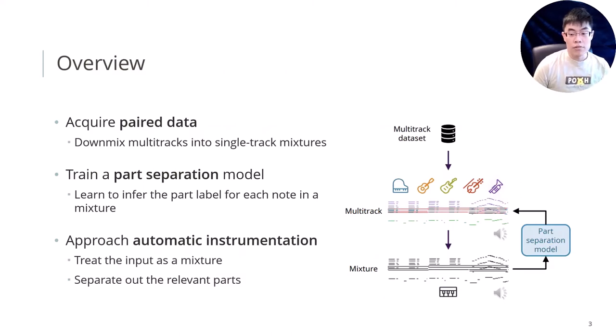An overview of our project is that we first acquire paired data of solo music and their instrumentation by downmixing multi-tracks into single track mixtures. Then we train the part separation model and learn to infer the part label for each note in the mixture. Finally, we can approach automatic instrumentation by treating the input as mixture and separating out the relevant parts.